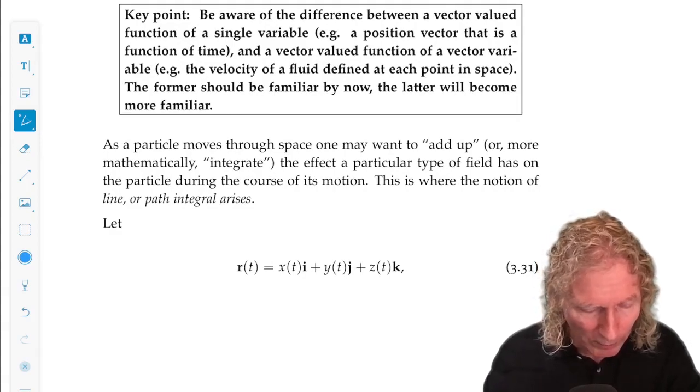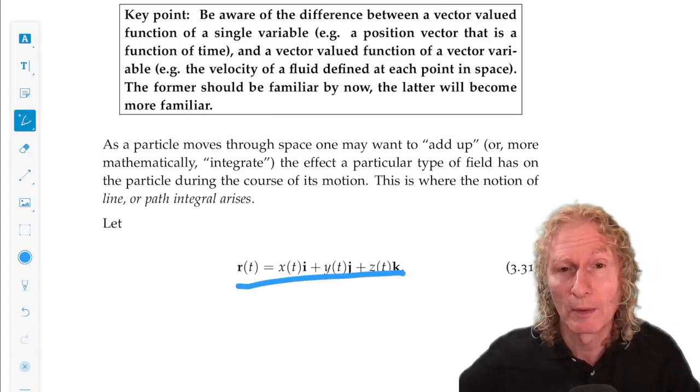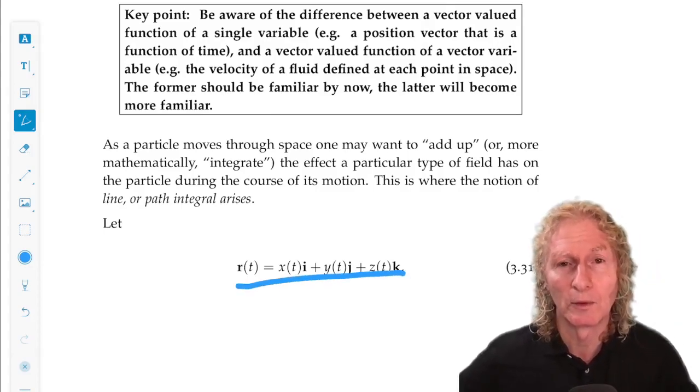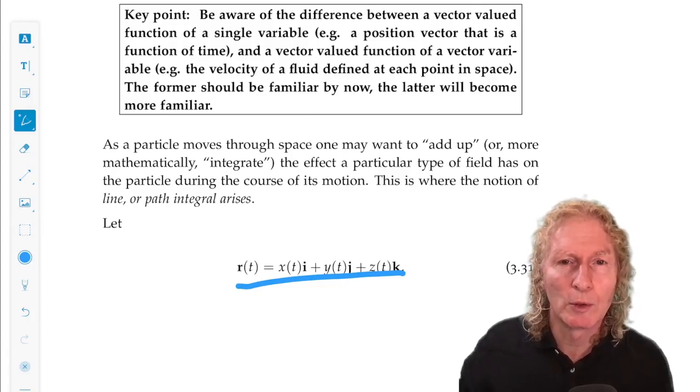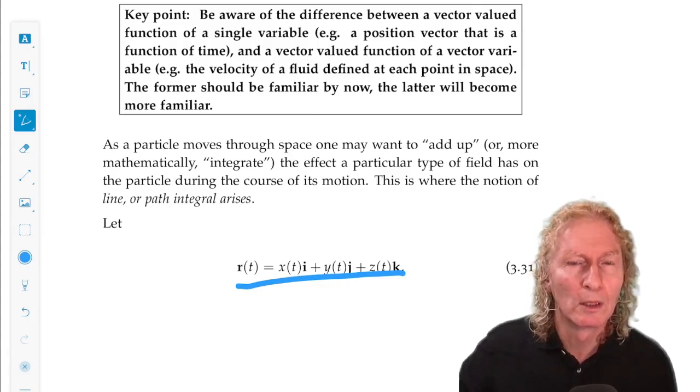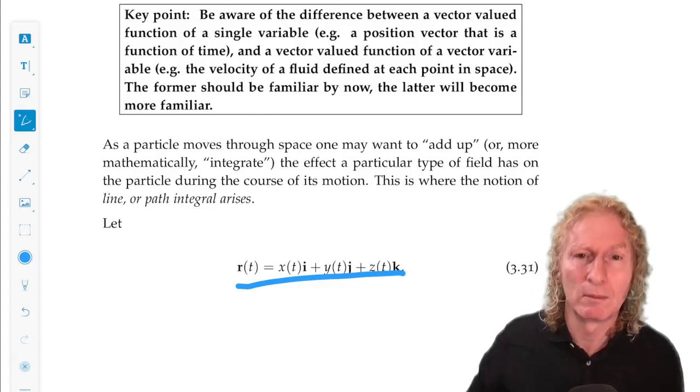And then we've already mentioned the notion of a space curve or path. And we represent it in this way. And there are a lot of applications. We're going to look at adding up the contributions of a vector field along a path. That's a bit of a vague statement, but you'll see exactly what I mean. Whenever someone says adding up, you think of integration.